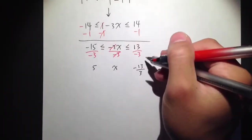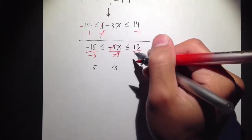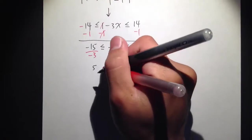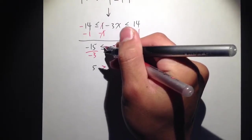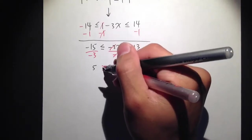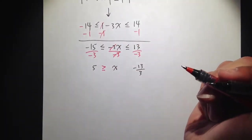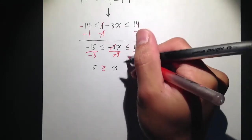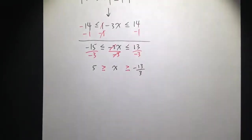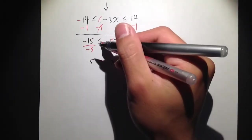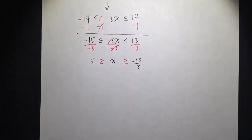Right here we divide by a negative number, so we will take the inequality and switch it. Instead of less than or equal to, we change that to greater than or equal to. And right here as well — instead of less than or equal to, we write greater than or equal to. Whenever we are dividing by a negative number, just make sure that you switch the inequality symbols.